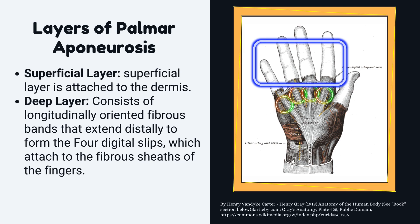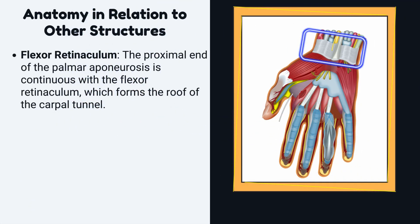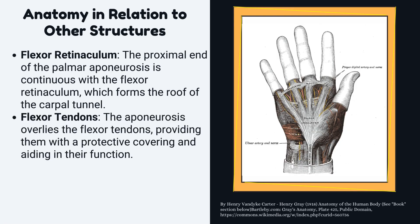The deep layer consists of longitudinally oriented fibrous bands that extend distally to form the four digital slips, which attach to the fibrous sheaths of the fingers. The proximal end of the palmar aponeurosis is continuous with the flexor retinaculum, which forms the roof of the carpal tunnel. The aponeurosis overlies the flexor tendons, providing them with a protective covering and aiding in their function.